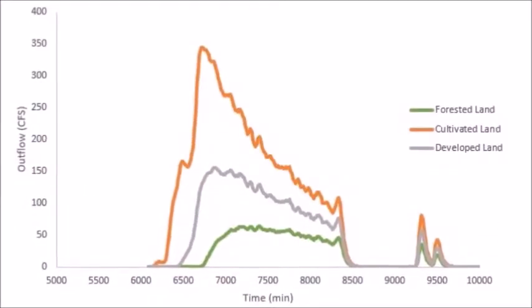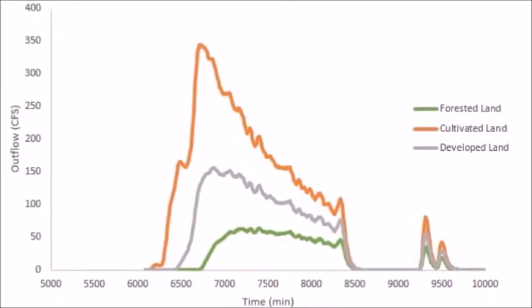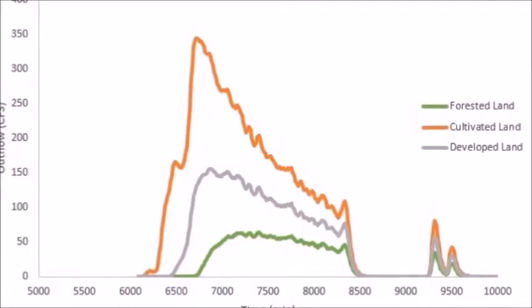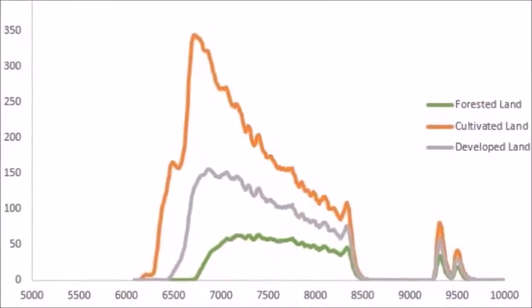These are the hydrographs of each run. We notice that the cultivated land has a higher peak than that of both the developed lands and the forested lands. While the outflow will never quite match that of the original habitat, the change in Fishers, Indiana is not as severe as was expected.